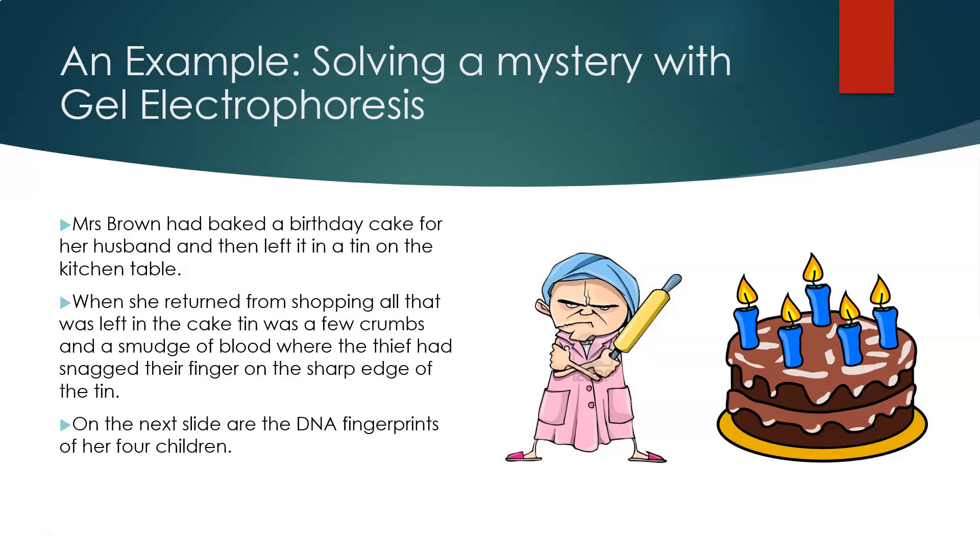Alrighty, let's solve a mystery. Here we've got Mrs. Brown and Mrs. Brown has baked a birthday cake for her husband. Then she left it in a tin on the kitchen table. She's not looking happy because when she returned from shopping, all that was left in the cake tin was a few crumbs and a smudge of blood where the thief had snagged their finger on a sharp edge of the tin. On the next slide are the DNA fingerprints of her four children.